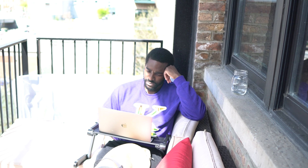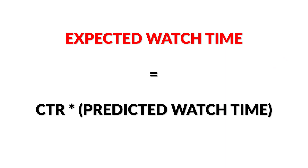The first big takeaway from this paper is that YouTube's goal is to keep you on the platform as long as possible. For each video, the algorithm optimizes for how likely you are to click on the thumbnail and how much of the video you're expected to watch. What they specifically optimize for is a metric called expected watch time. This is the click-through rate — the probability that you click on the video — multiplied by the expected amount of time that you'll be watching that video.